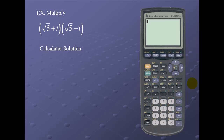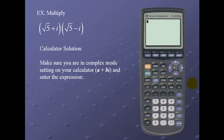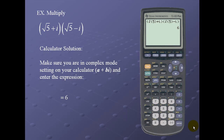Let's look at the calculator solution. Since we already have the right mode settings, we'll simply enter the expression: a beginning parenthesis, then the square root — notice you're given a beginning parenthesis for your square root — put in the radicand 5, close off the radical, plus i. Then the square root of 5 minus i. Be sure to close off your parenthesis. Here again we get a result of 6.